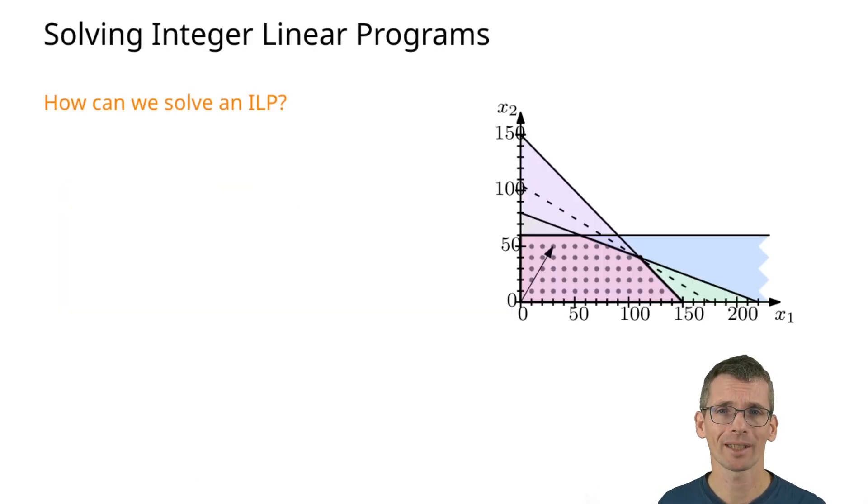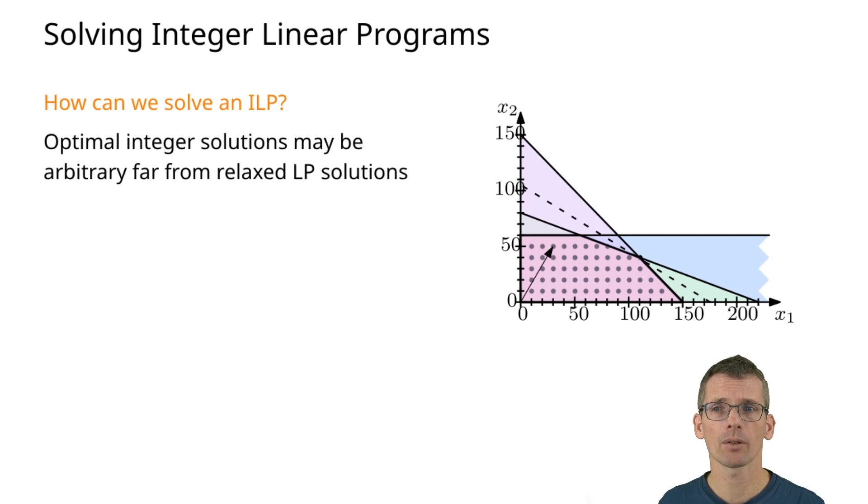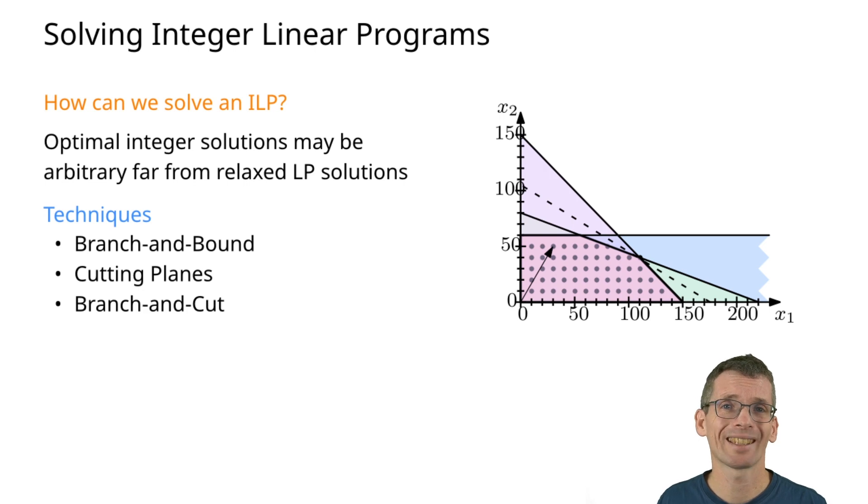Finally, I want to talk about techniques for solving integer linear programs. This is just a very brief overview to give you some impression of how this works. The general idea is always to use LP relaxation, but the problem is that the solution to our LP might be far away from the optimal solution to the ILP. Then we have to somehow continue to find a better solution. The techniques most commonly used are branch and bound, cutting planes, and the combination of the two: branch and cut.